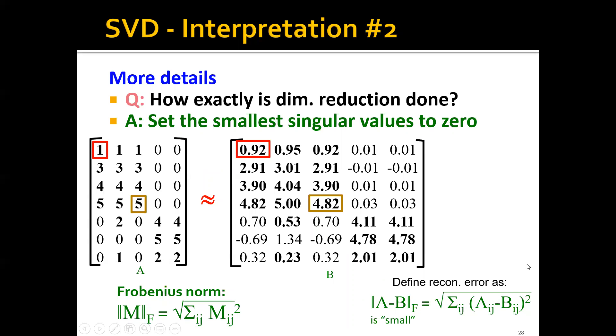Let's first define the reconstruction error as a Frobenius norm of the distance between matrix A and matrix B. This is effectively just the sum of the square distance of each element in A and B. As we can see, the reconstruction error is actually quite low. For example, the first element of matrix A is 1, and correspondingly, the first element in B is actually 0.92, which is very close to 1. Another example is the element in the center of A is 5, and correspondingly, the element in the center of B is 4.82, which is also very close to 5.